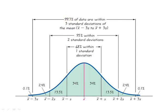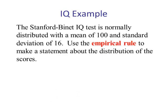Now let's do an example. The Stanford-Binet IQ test is normally distributed with a mean of 100 and a standard deviation of 16. Use the empirical rule to make a statement about the distribution of the scores. Since we know this is normally distributed, it's bell-shaped, with mean 100 and standard deviation 16.